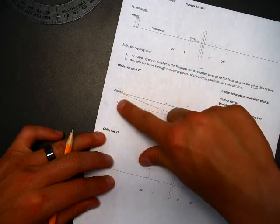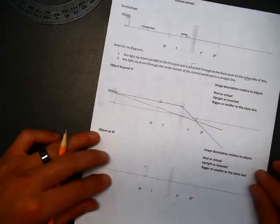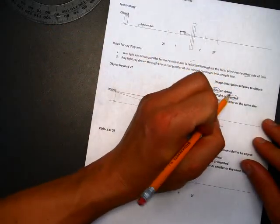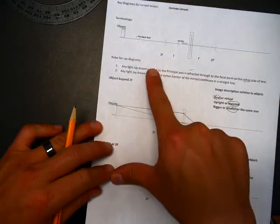This side right here, since it's a straight line. So that is a real image that is upside down or inverted, and it is smaller. That is how you follow these two rules every time.